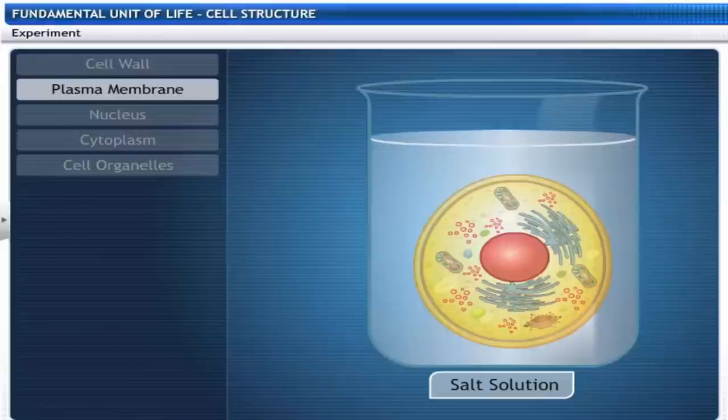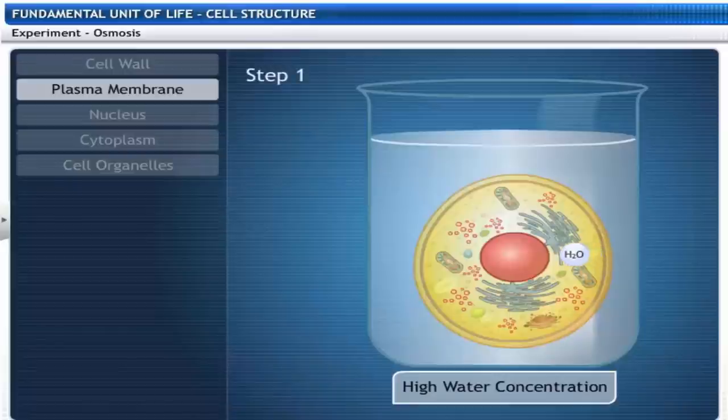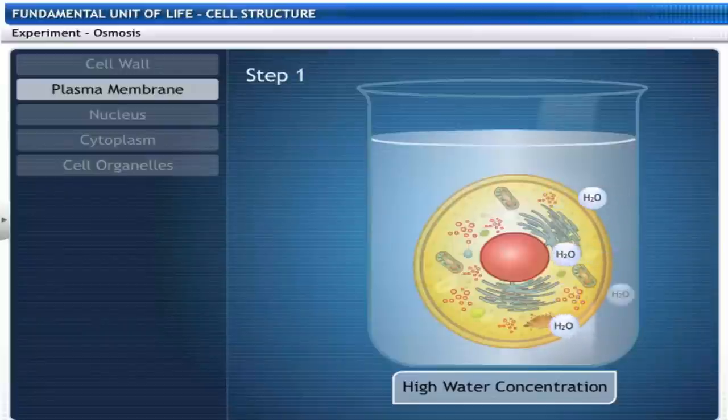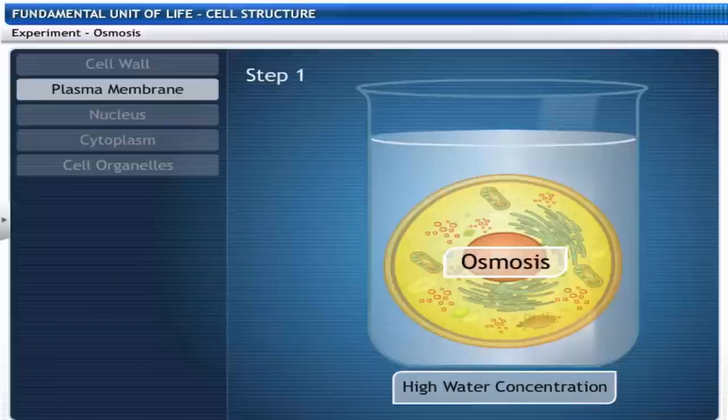Let's try this out. See what happens when the cell is placed in salt solution. One of three things could happen now. If the medium surrounding the cell has a higher water concentration than the cell, the cell gains water by osmosis and swells. Such a solution is known as hypotonic solution.